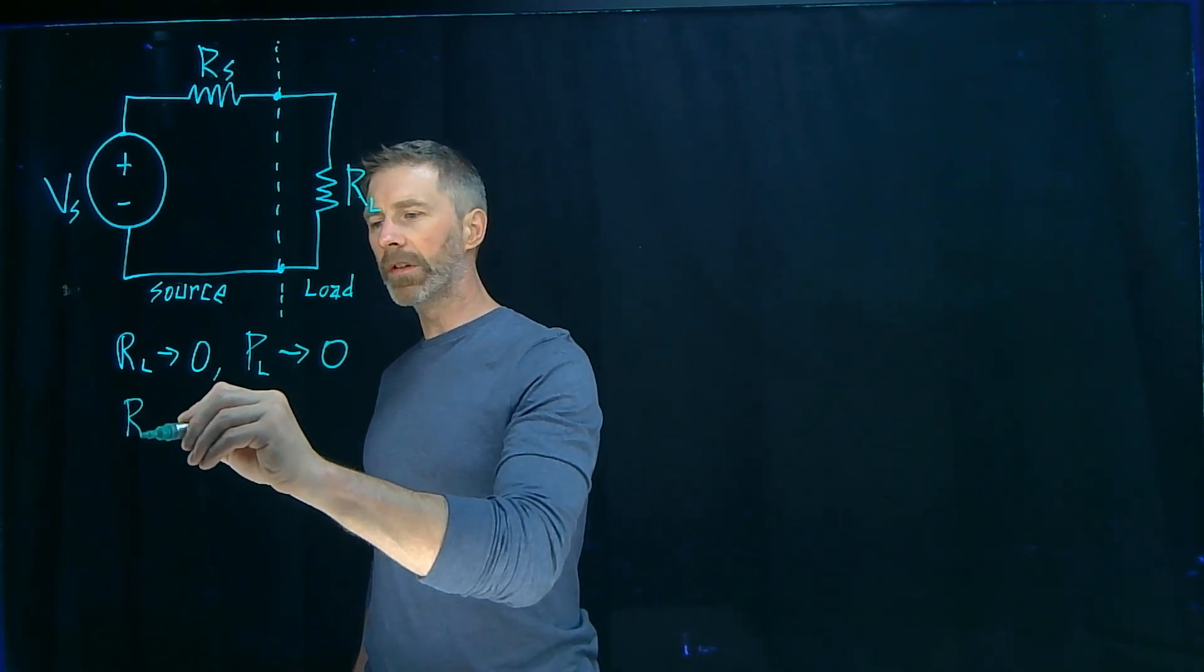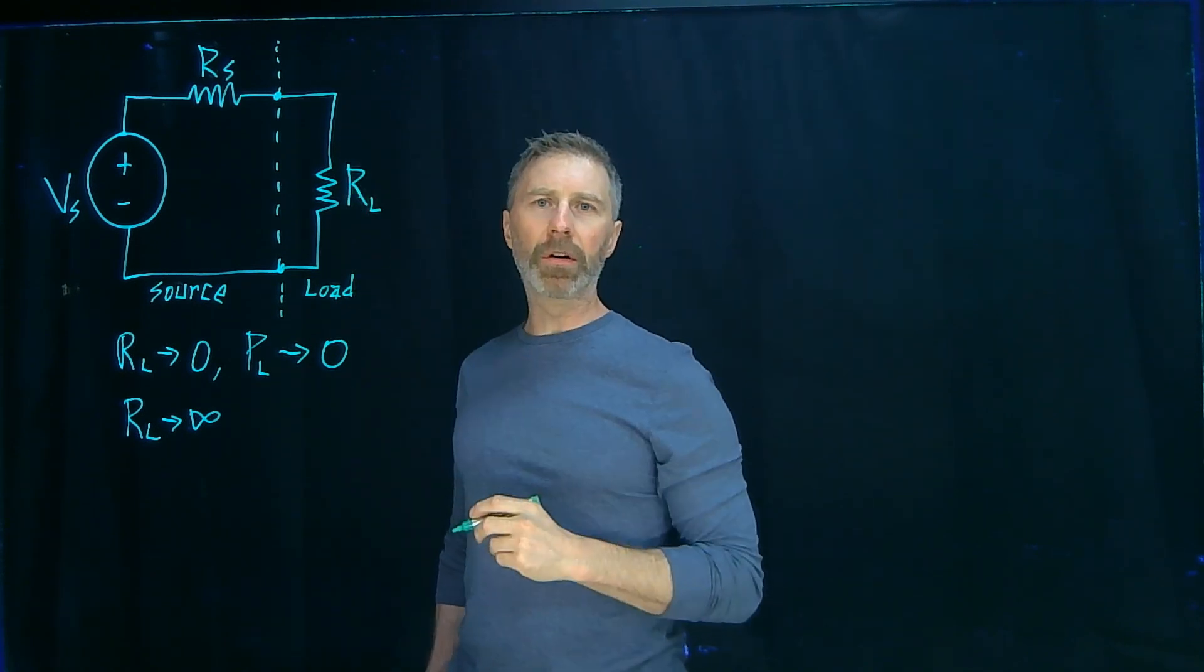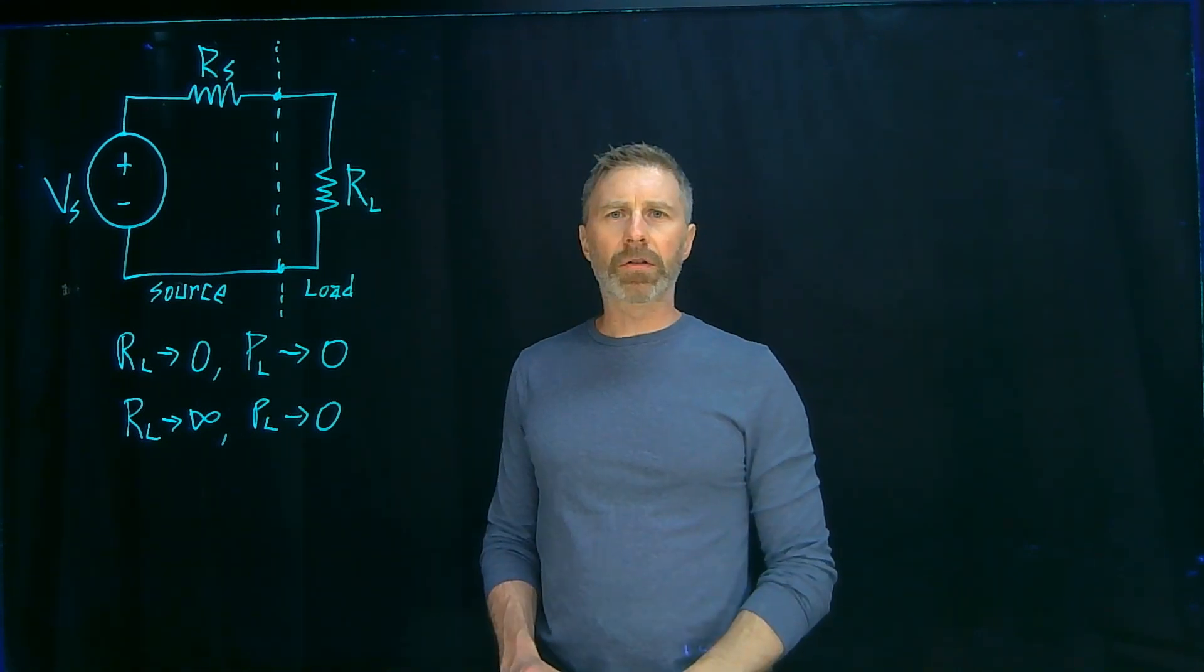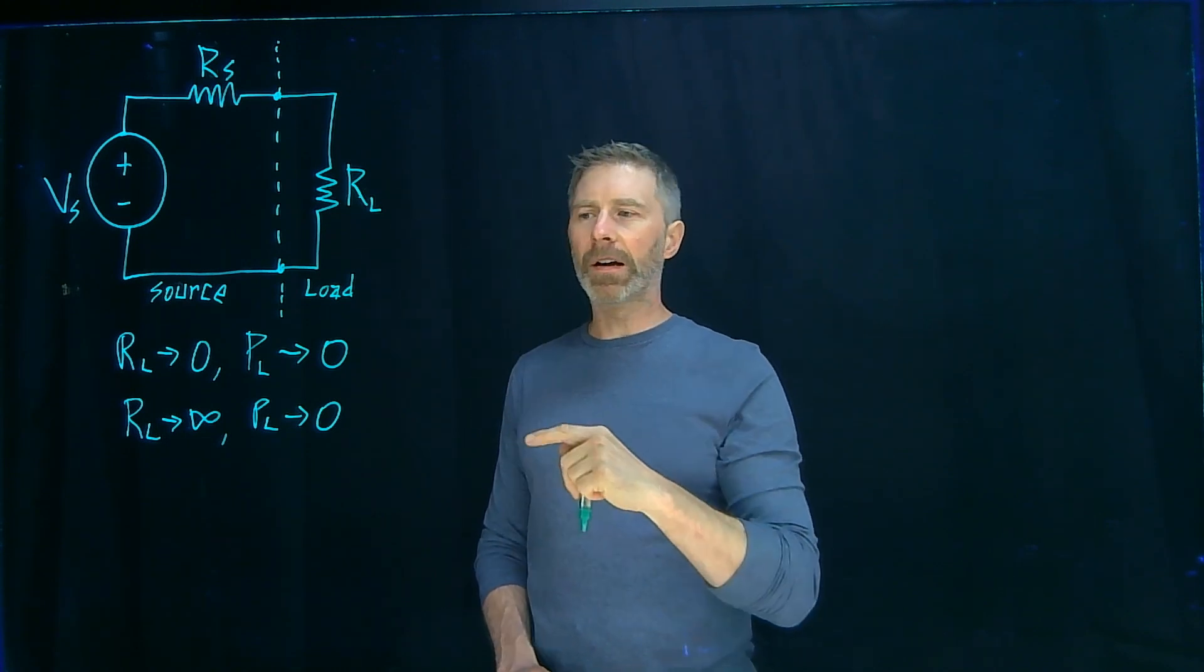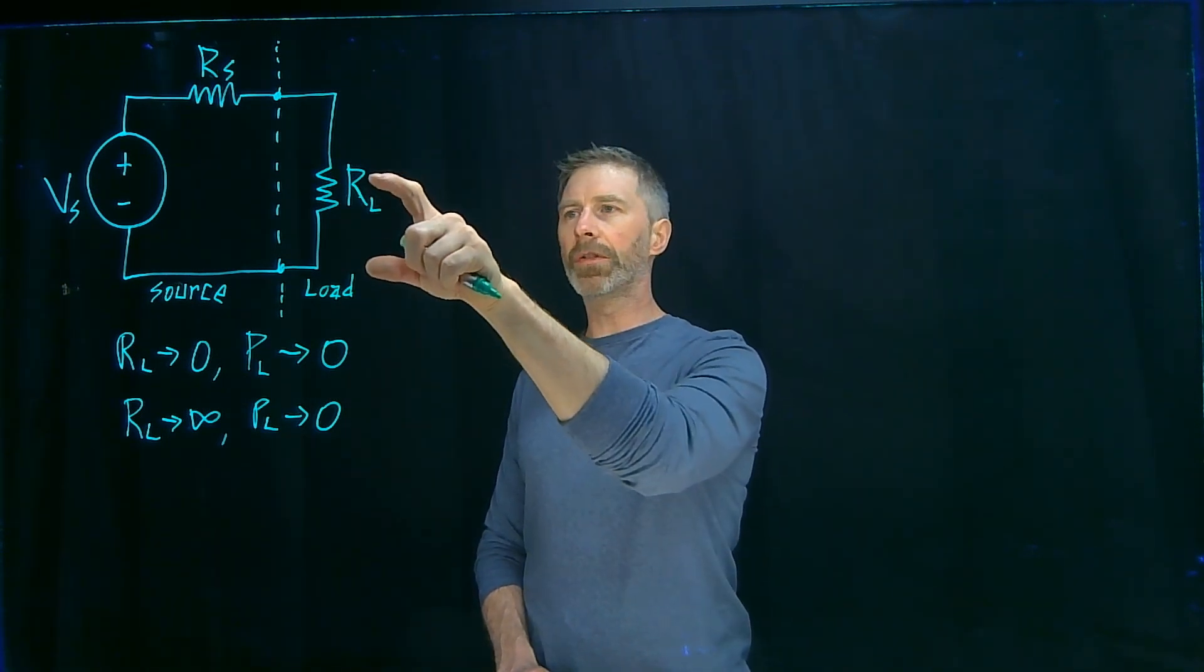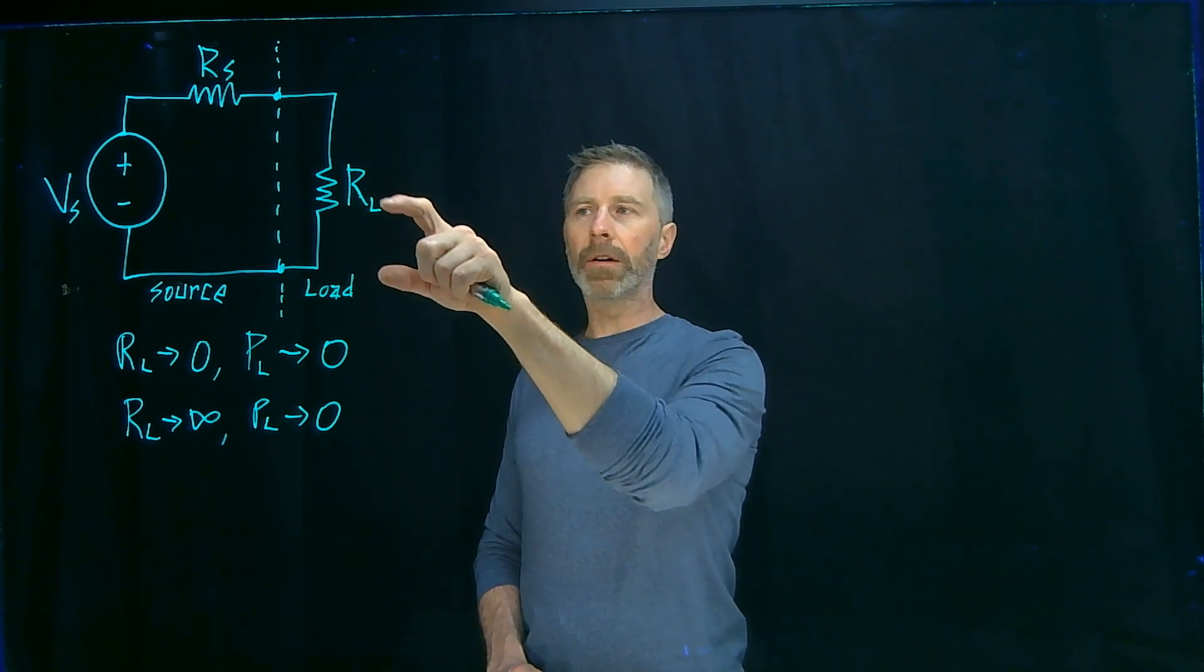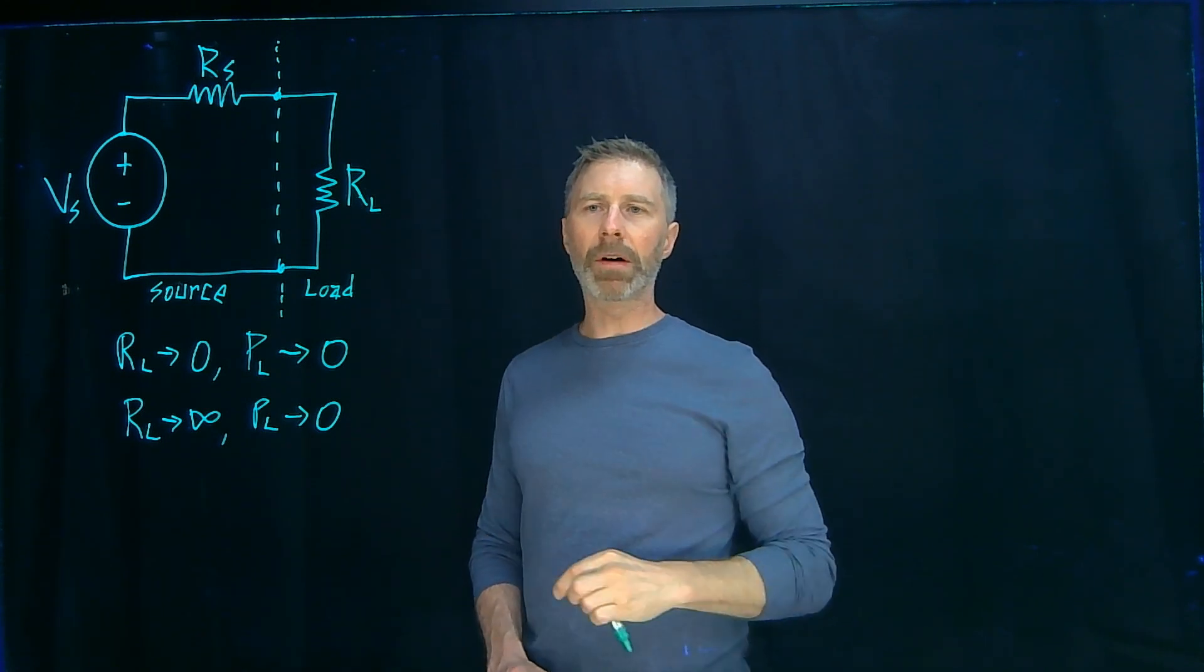Now, if the resistance gets bigger and bigger approaching infinity, then that basically becomes an open and you have no current going through the load, so again, the power to the load is zero. So what the maximum power transfer theorem shows is the value for that load resistor where the power is the maximum. You can see that if the load resistor starts increasing from zero, there's going to be some voltage drop across it and power dissipated by it. And same thing if you're going from an open and you start decreasing the load, or you add a resistor there and start decreasing that resistance, there's going to be current going through it, so therefore there's going to be power dissipated by it.